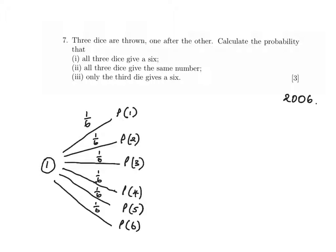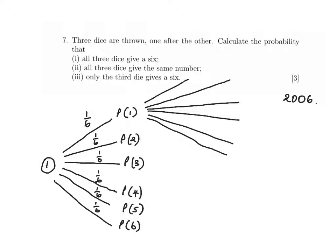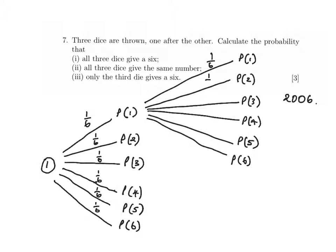Having rolled the first dice, we can also roll the second dice, and there will also be six branches for each of the six numbers. So we've got probability of getting a one, probability of getting a two — exactly the same as the first set of branches, except that they follow on from that first set. We've got one sixth here because throwing a one or a two or a three, etc., on the second dice is entirely independent of the result we got for the first dice. So one sixth.